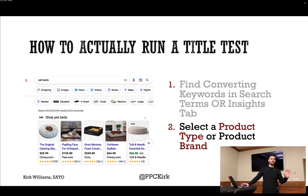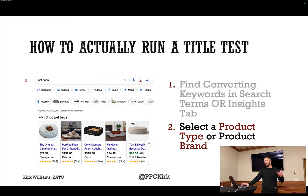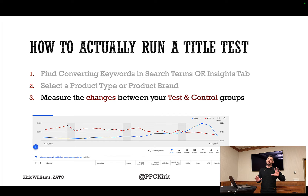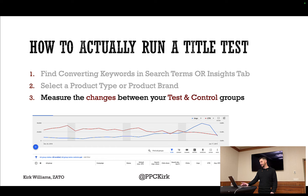I wouldn't necessarily suggest doing that on all your products. You could actually pick a specific product type or brand, use that, throw that at the top, and then measure the change in your test and control groups over time — because you can't actually do super easy A/B tests. That's how we think about running a title test.